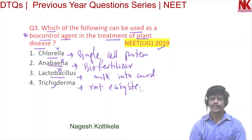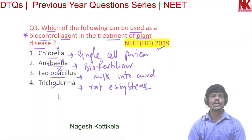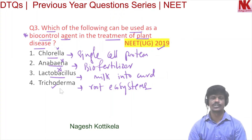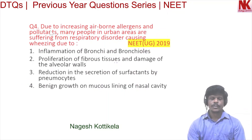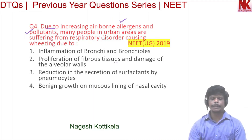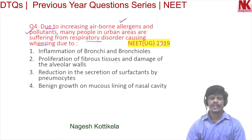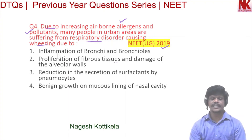Trichoderma acts as a biocontrol agent and controls several plant pathogens, so the most appropriate option is option four. Moving to the next question: due to increasing airborne allergens and pollutants, many people in urban areas are suffering from a respiratory disorder causing wheezing. This question was also asked in NEET 2019. Option one is inflammation of bronchi and bronchioles.